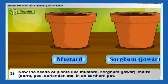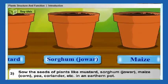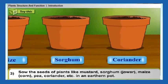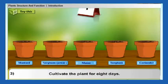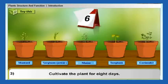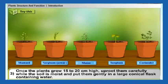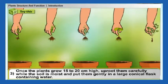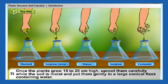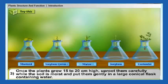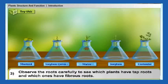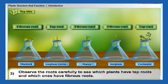Activity three: sow seeds of plants like mustard, sorghum (jowar), maize (corn), pea, and coriander in an earthen pot. Cultivate the plants for eight days. Once the plants grow 15 to 20 centimeters high, uproot them carefully while the soil is moist and put them gently in a large conical flask containing water. The soil will wash off without any harm to the roots. Observe the roots carefully to see which plants have tap roots and which ones have fibrous roots.